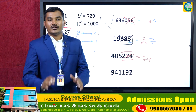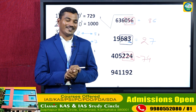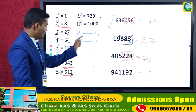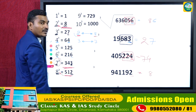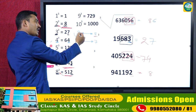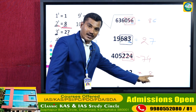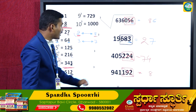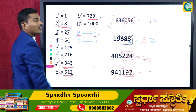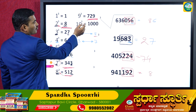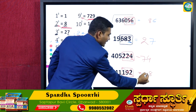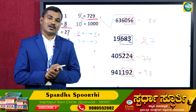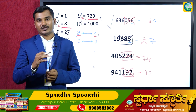Fourth cube root example: unit digit is 2, so the answer's unit digit is 8. Neglect the last three digits — 941 is remaining. It lies between 729 (9³) and 1000 (10³), so the previous value is 9. The answer is 98.